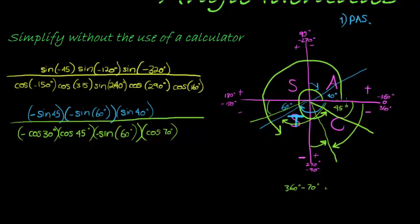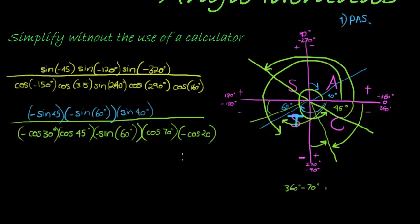However, cosine of 160 is in the second quadrant. It's 20 shy of 180, and cosine is negative in that quadrant, so that gives negative cosine of 20. Now let's look at the signs overall: we have negative, positive, negative, positive, negative — so this whole expression will have a negative sign.